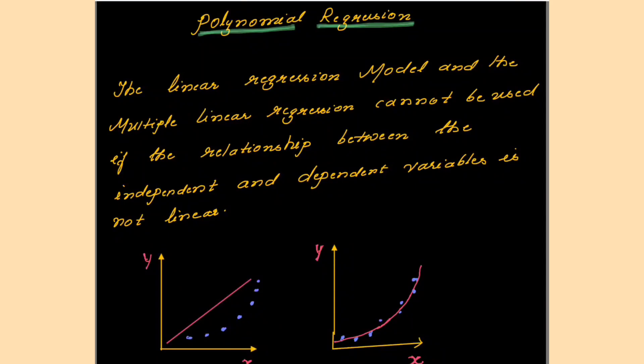Hello viewers, welcome to the video lecture series on machine learning. This session is on polynomial regression. In the previous session, you have studied the linear regression and multiple linear regression, and you know the difference between these two. You have also seen one solved example on linear regression and one solved example on multiple linear regression.